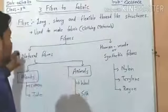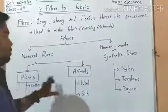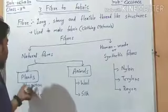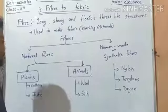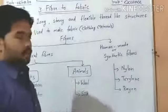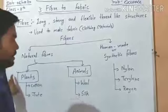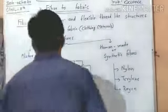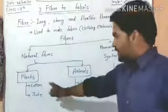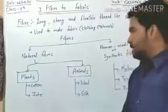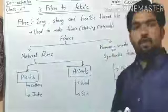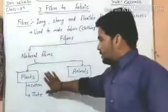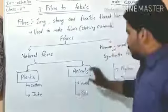Natural fibers are obtained from two sources: plants and animals. From plants we get cotton and jute; from animals we get wool and silk. So cotton and jute are plant fibers, wool and silk are animal fibers. These are natural fibers — humans cannot make cotton, jute, wool, or silk artificially; they are obtained naturally.